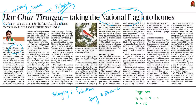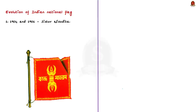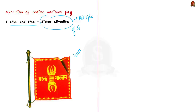We did not immediately come up with the current tricolour flag — before that India had different flags. Let us see how the Indian national flag has evolved over time. We can start from the pre-independence era. Between 1904 and 1906 the first Indian flag came into existence. As you can see in this image, it was made by Sister Nivedita, who was the Irish disciple of Swami Vivekananda. As you can see, there is no tricolour in this flag.